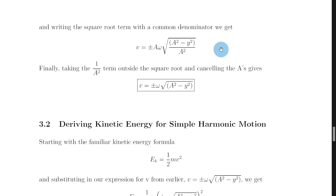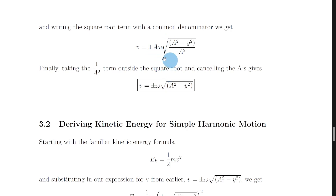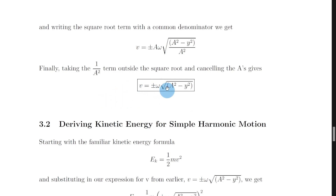We just need one more step to reach the final equation. We can take the 1 over a squared term outside the square root and cancel the a's. The square root of 1 over a squared is simply 1 over a, so we have a divided by a, and the a's cancel out. This gives us v equals plus or minus omega times the square root of a squared minus y squared — our final expression for the velocity of an object undergoing SHM — where omega is the angular frequency, a is the amplitude, and y is the displacement.